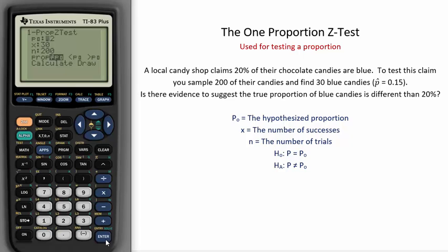This is the hypothesized true proportion. It is known as P₀ and we'll use it for our null. To test this claim you sample 200 of their candies and find 30 blue candies. With this in mind, X is the number of successes and n is the number of trials.